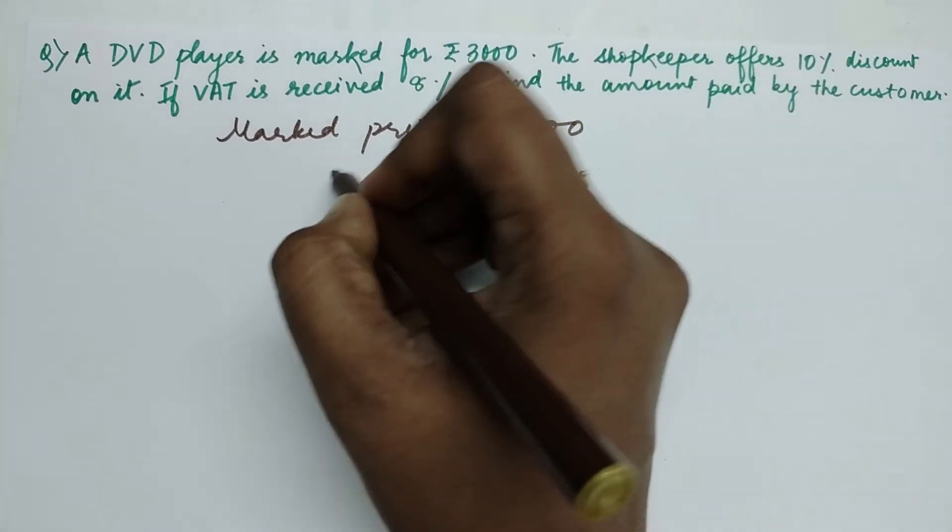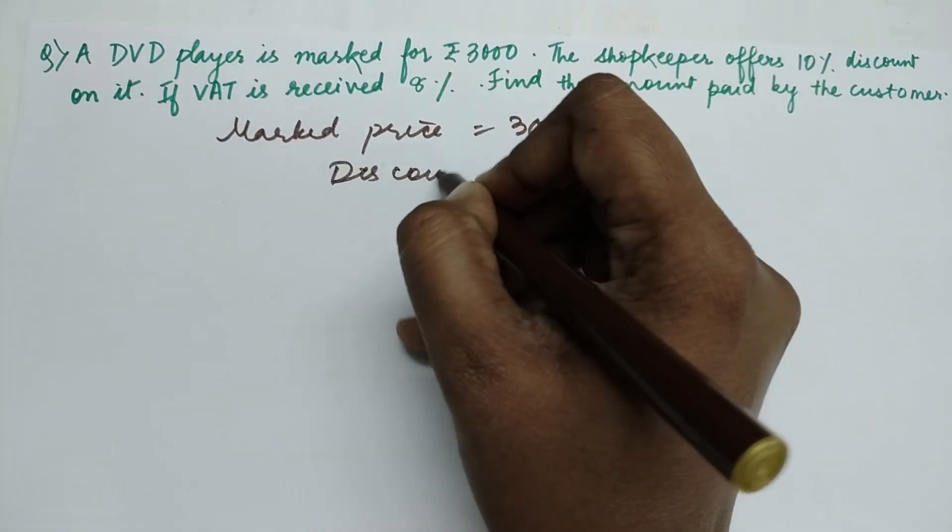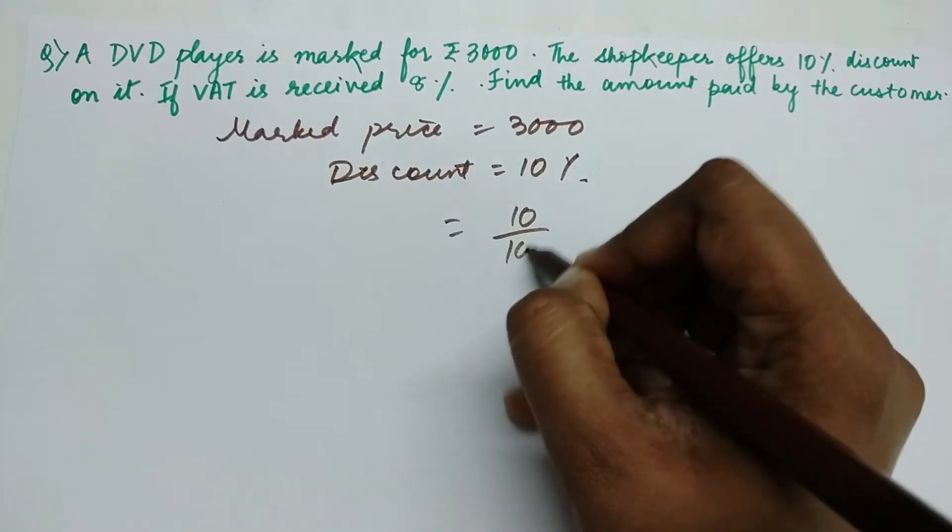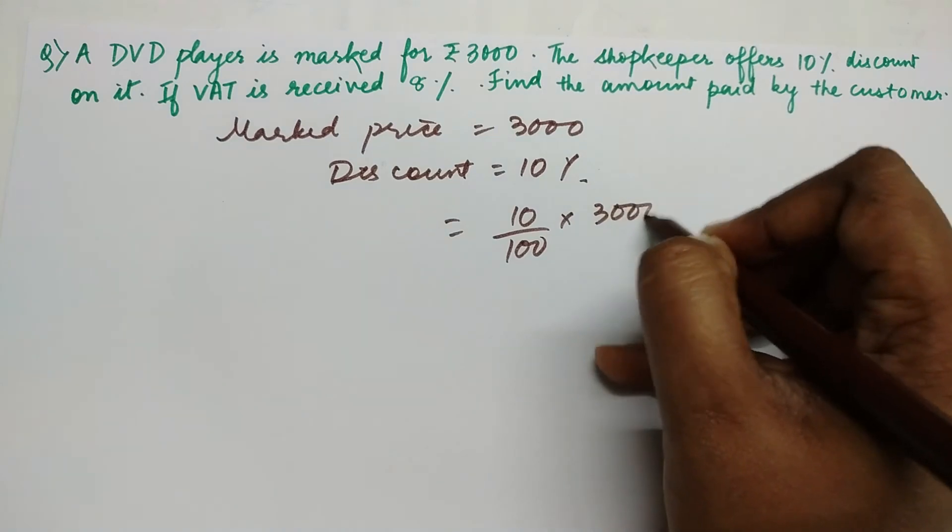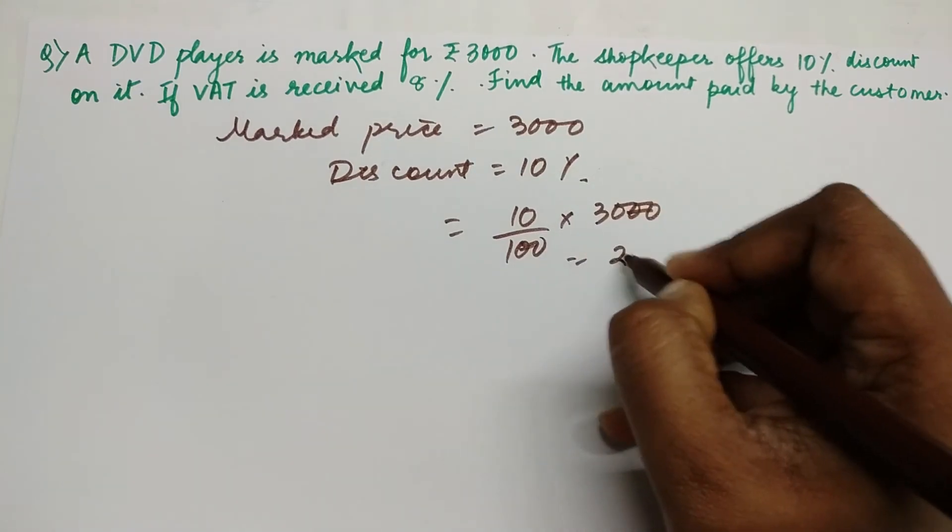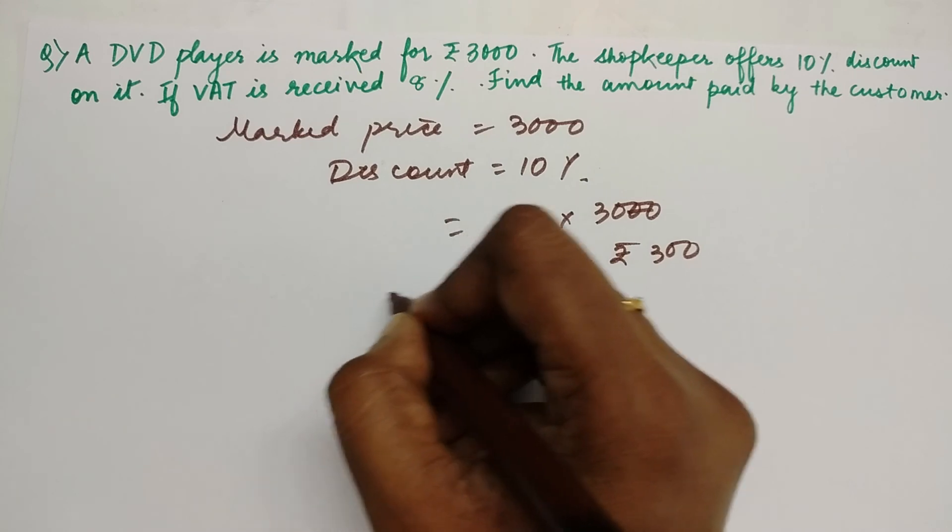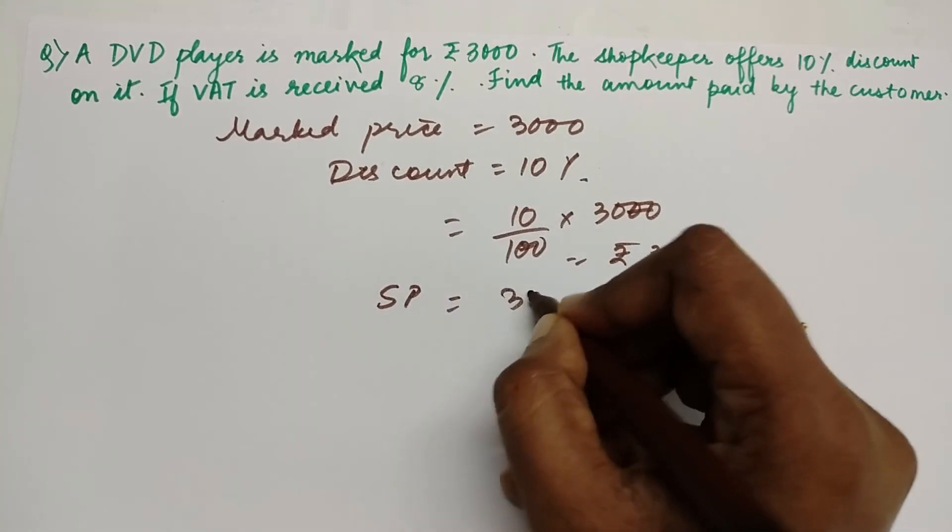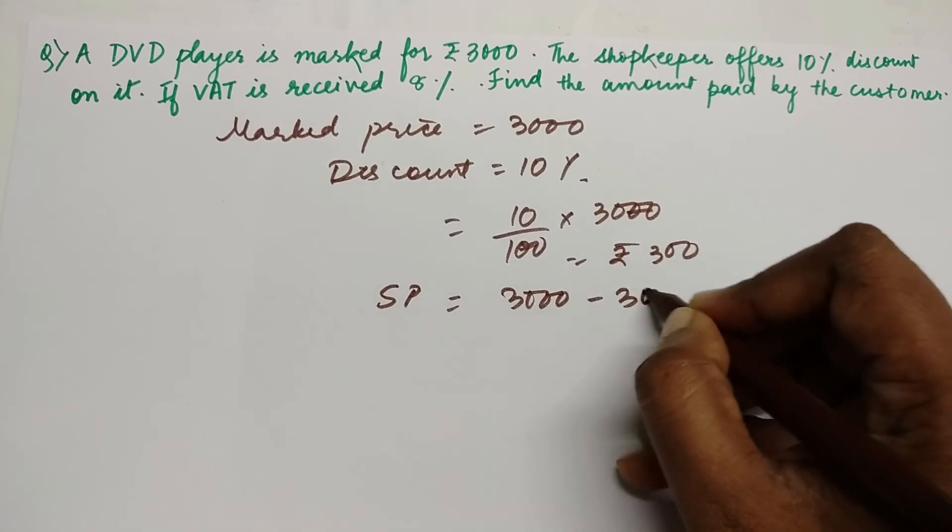Now here there is a discount of 10%, so always the discount has to be subtracted. So that is 10% of your marked price, which is ₹300. So your price which the user is going to get after discount would be ₹2,700.